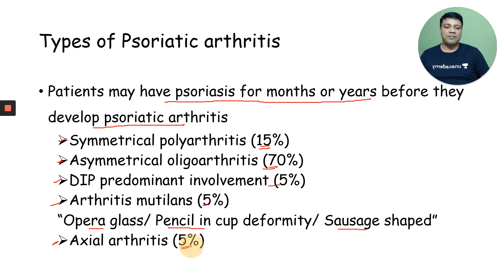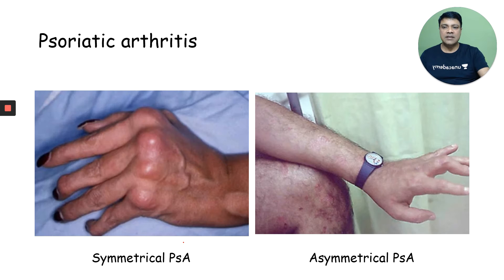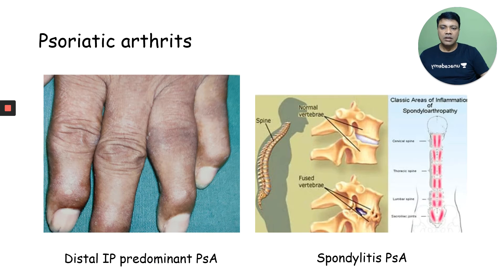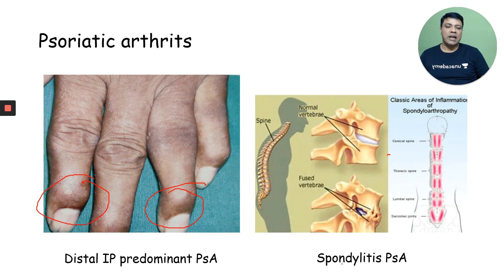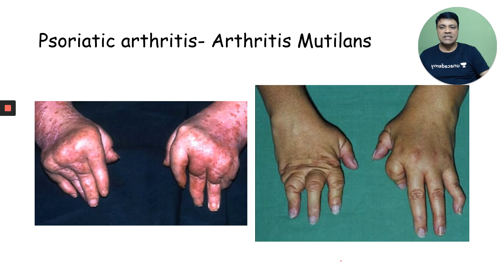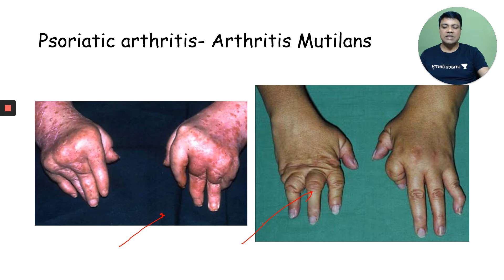Axial arthritis is again 5%. I will show you clinical images of these types of psoriatic arthritis. This is symmetrical psoriatic arthritis — you can see all the joints are involved symmetrically, while this is asymmetrical, with asymmetrical involvement of the joints. This is distal interphalangeal joint predominant psoriatic arthritis, with only the distal interphalangeal joints involved. This is axial psoriatic arthritis or spondylitis psoriatic arthritis. Lastly, this is arthritis mutilans associated with opera glass, pencil-in-cup deformity, or sausage-shaped fingers.